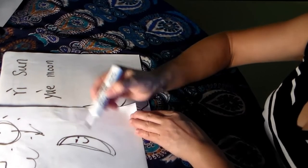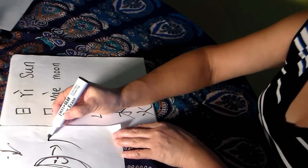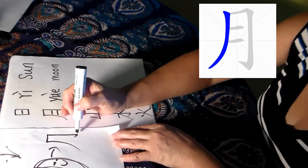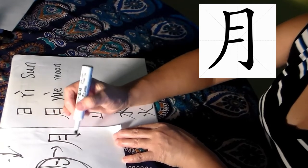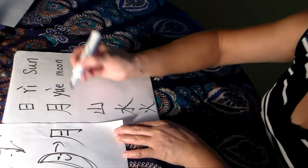So develop this word as like, it's not closed. This is called yue. Yue, yue. So this is yue. Yue, yue. Moon, moon.